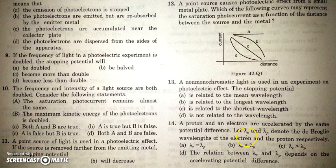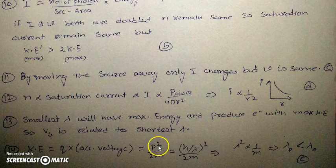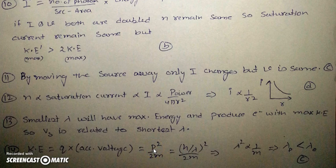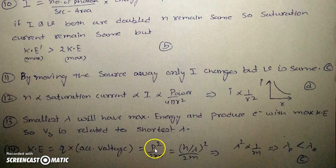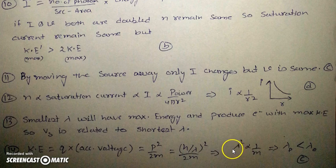Question fourteen: a proton and an electron are accelerated through the same potential difference. λ_e and λ_p denote their de Broglie wavelengths. Since they have the same charge, their kinetic energy is the same, and KE = p²/2m. The lighter particle (electron) has smaller momentum and therefore larger de Broglie wavelength (λ = h/p). So λ_e > λ_p.